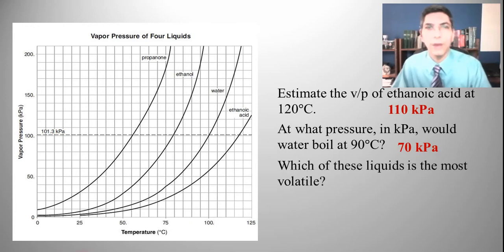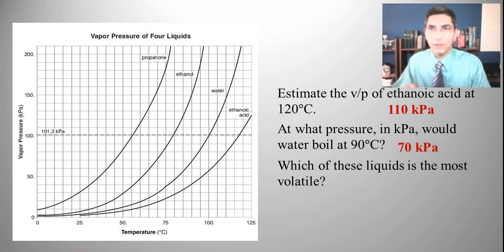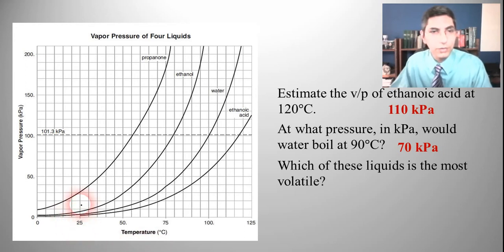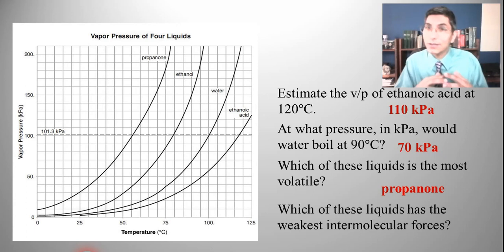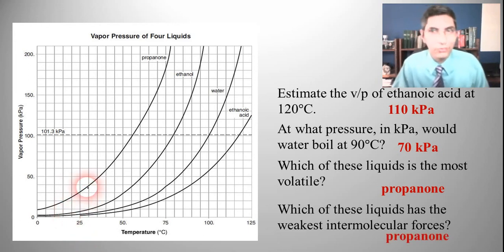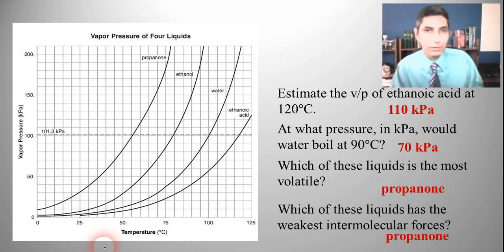Which of these liquids is the most volatile? The definition of volatile is something that has the highest vapor pressure at normal room temperatures — about 20 to 25 degrees Celsius. The one with the highest vapor pressure is propanone, so propanone is the most volatile. Which has the weakest intermolecular forces? Since weaker intermolecular forces lead to higher vapor pressure, it's again propanone — it has the highest vapor pressure across essentially any temperature shown on the graph.